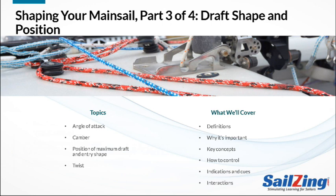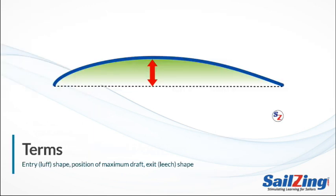Today's topic is Draft Shape and Position. Draft Shape is really three related concepts: entry shape, position of the maximum draft, and exit shape. Entry shape refers to whether the leading edge of the sail — that is, the luff — is round or flat.